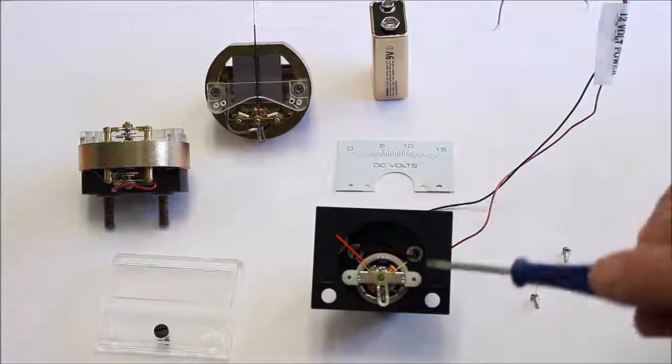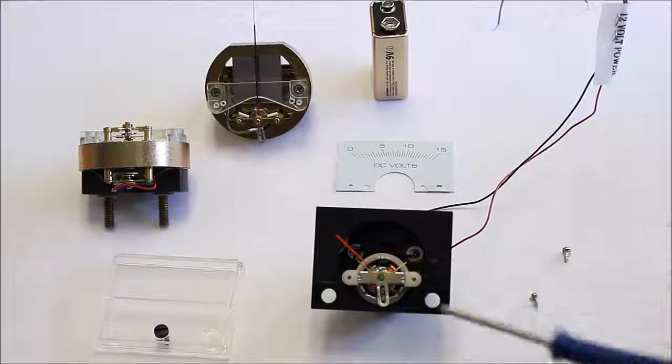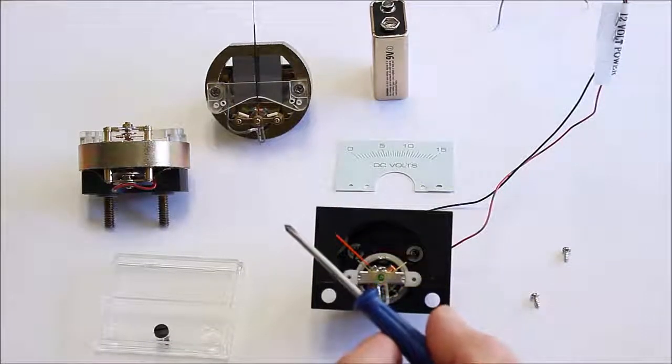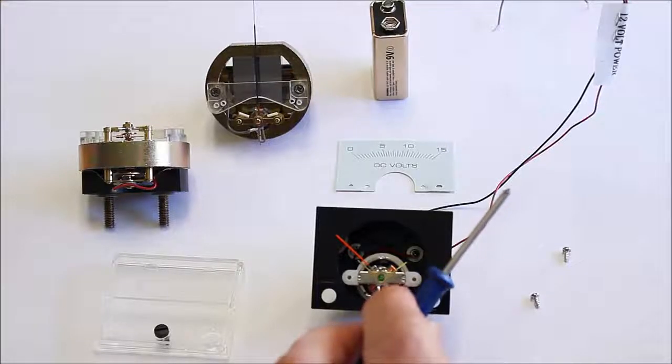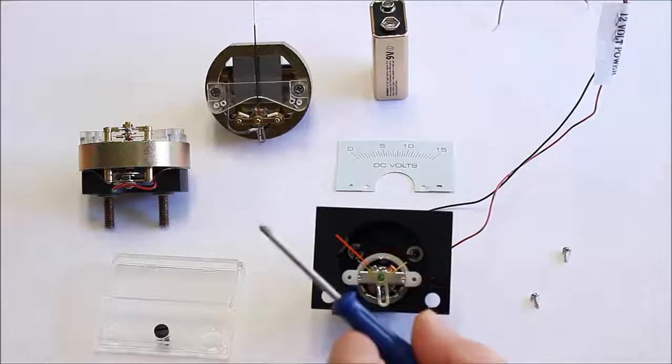Now if you look closely, there's a spring inside there, so that holds tension on the assembly. So when the current is applied, it goes forward to the right, and then when it's let go, the spring returns it back to zero.